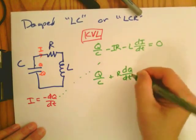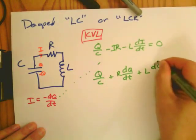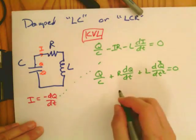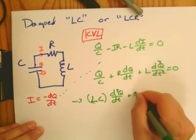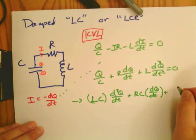And we get an expression with a second order term for Q. Some rearranging to get rid of the fractions. LC times d²Q/dt² plus RC times dQ/dt plus Q equals 0.